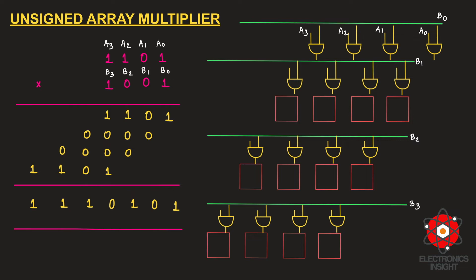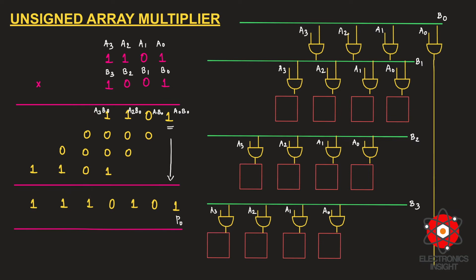For each multiplier bit, we feed all 4 multiplicand bits (a0, a1, a2, a3) into the AND gates. We proceed similarly for b1, b2, and b3. For 4 stages, we have 16 logical AND gates in total to generate all the partial products. The result a0·b0 becomes the first bit of the final product, p0.